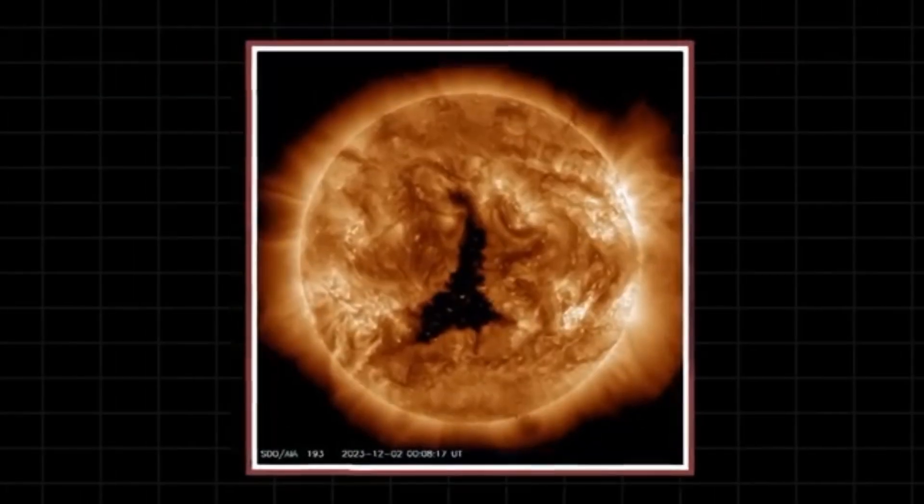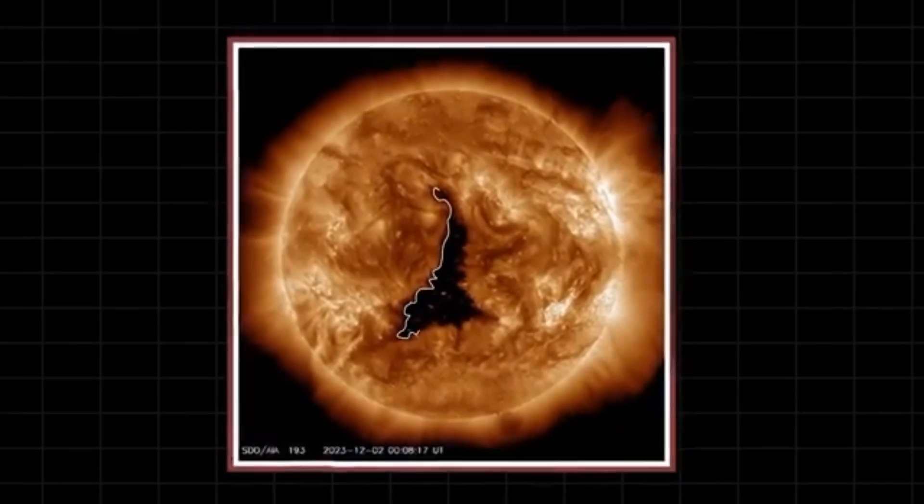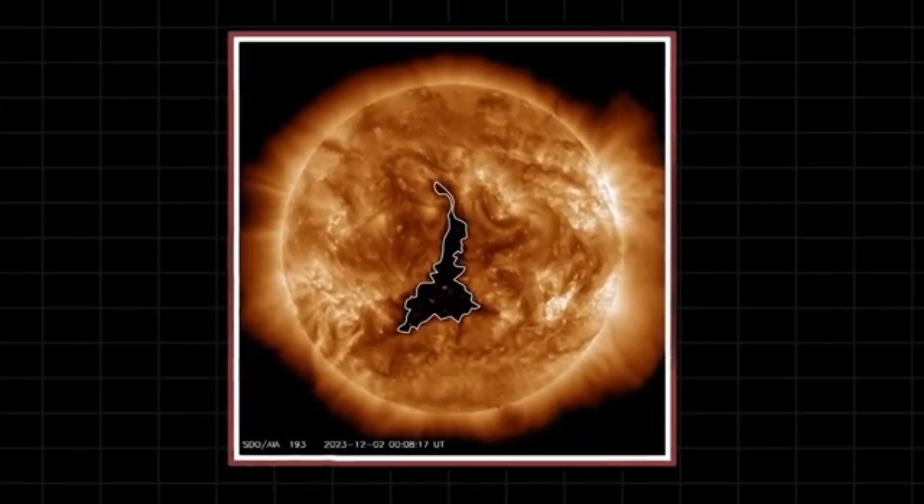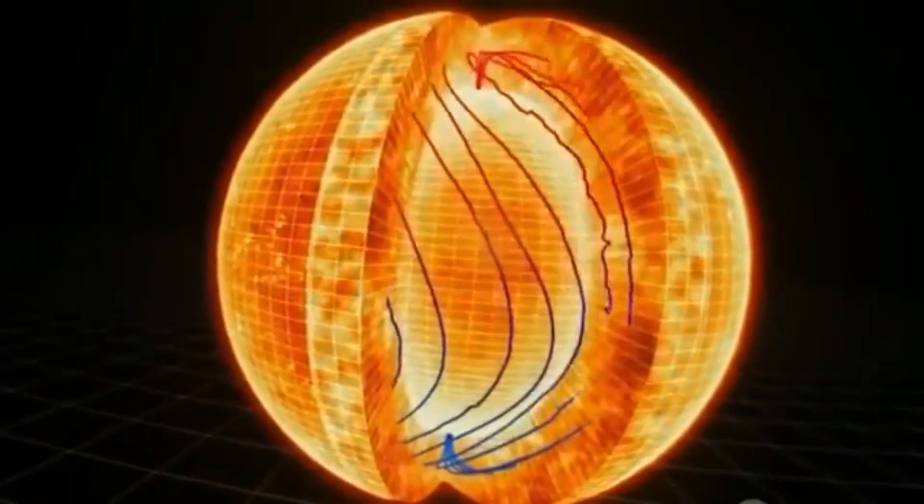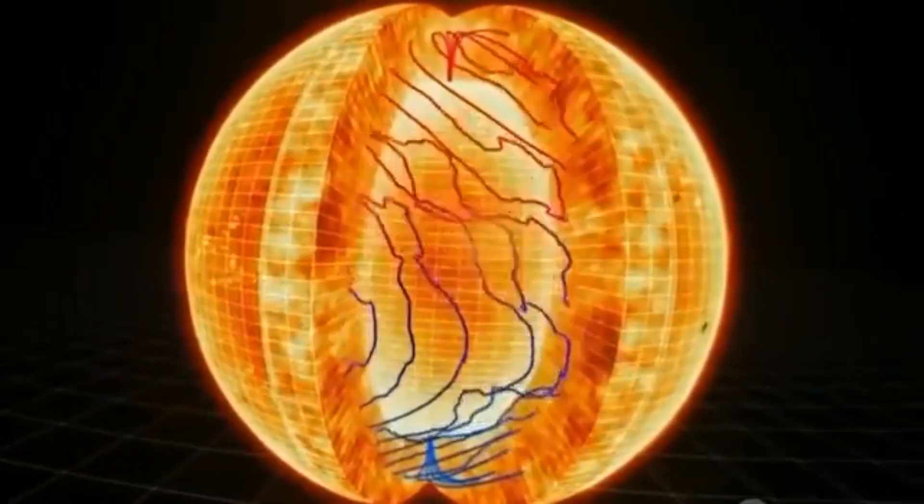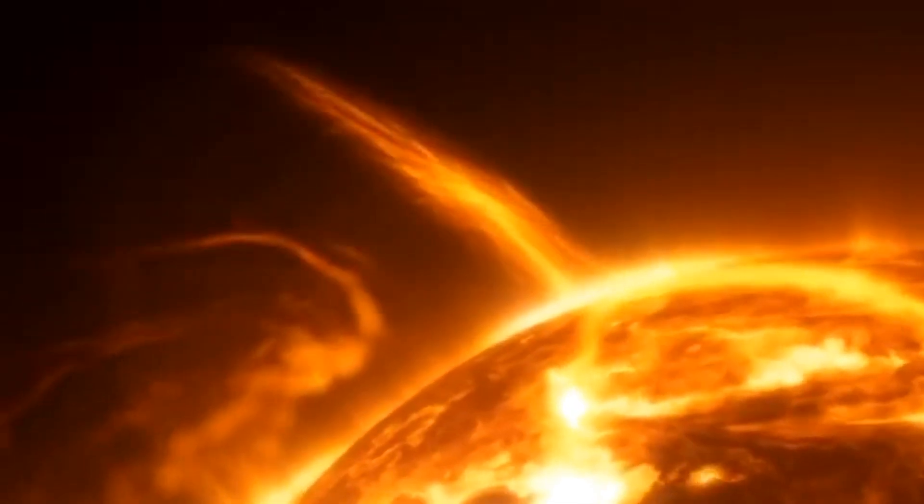Now, what about the massive cracks that sometimes appear on the sun's surface? These are known as coronal holes, areas where the sun's plasma density drops, weakening the magnetic field in that region. Coronal holes are a normal part of solar activity.